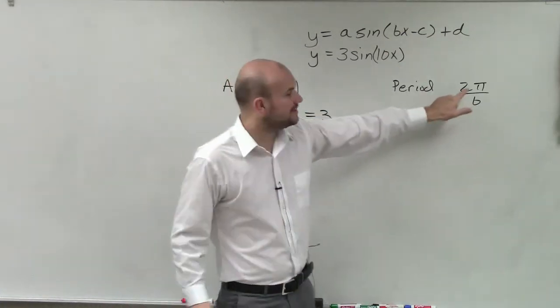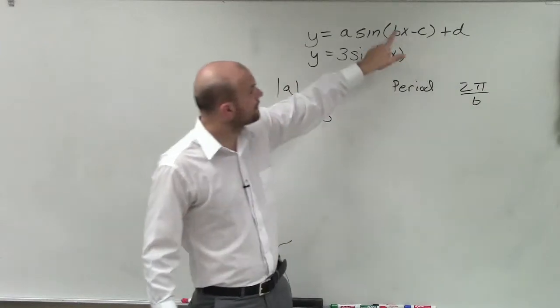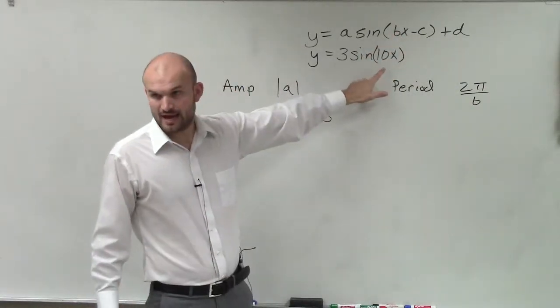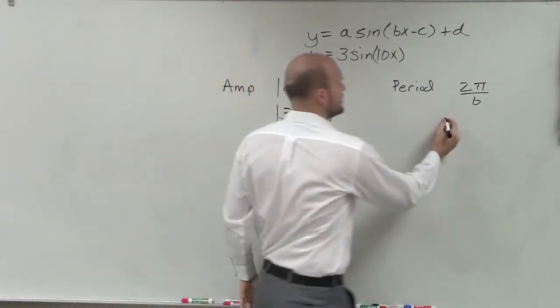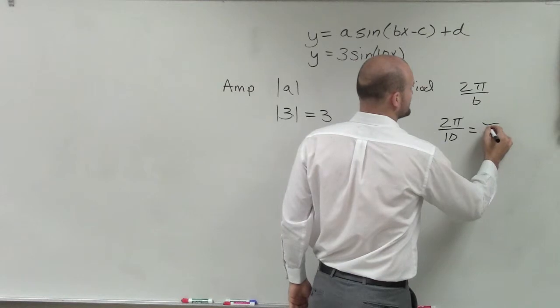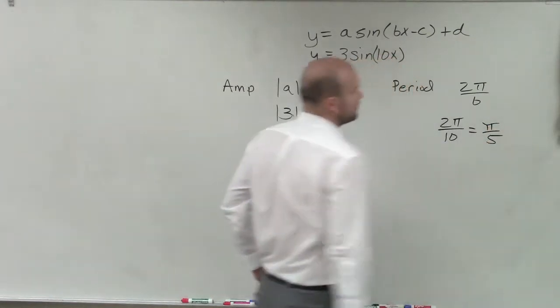The period is 2π divided by b, where b is your coefficient of x. Well, in this case, we have b as our 10. So our period is 2π divided by 10, which reduces down to π over 5.